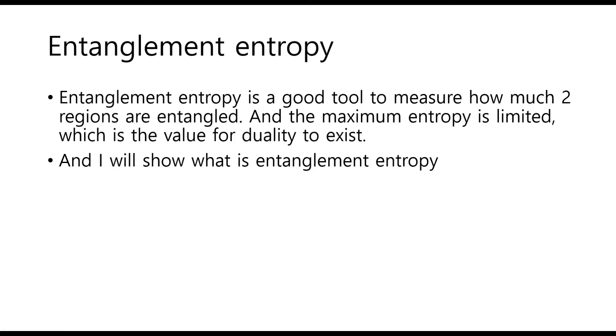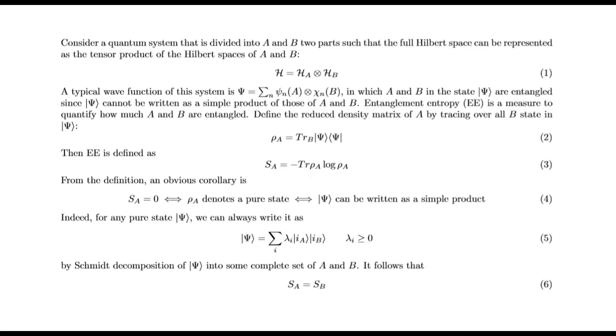Definition of Entanglement Entropy: Entanglement entropy is a good tool to measure how much two regions are entangled. The maximum entropy is limited, which is the value for duality to exist. Consider a quantum system that is divided into A and B, two parts such that the full Hilbert space can be represented as the tensor product of the Hilbert spaces of A and B. A typical wave function of this system is ψ = Σ cᵢⱼ|i⟩_A|j⟩_B. Entanglement entropy is a measure to quantify how much A and B are entangled. Define the reduced density matrix ρ_A = Tr_B(|ψ⟩⟨ψ|). Then entanglement entropy is defined as S_A = -Tr(ρ_A log ρ_A).